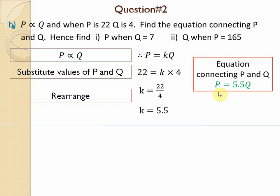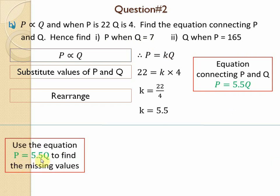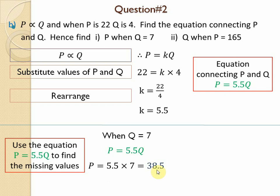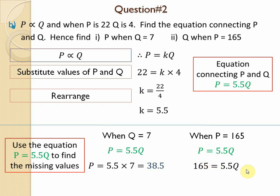Using the equation p = 5.5q to find missing values: first part — find p when q = 7. Multiply 7 by 5.5 to get p = 38.5. Second part — when p = 165, write the equation p = 5.5q, substitute p = 165, then divide 165 by 5.5 to get q = 30.